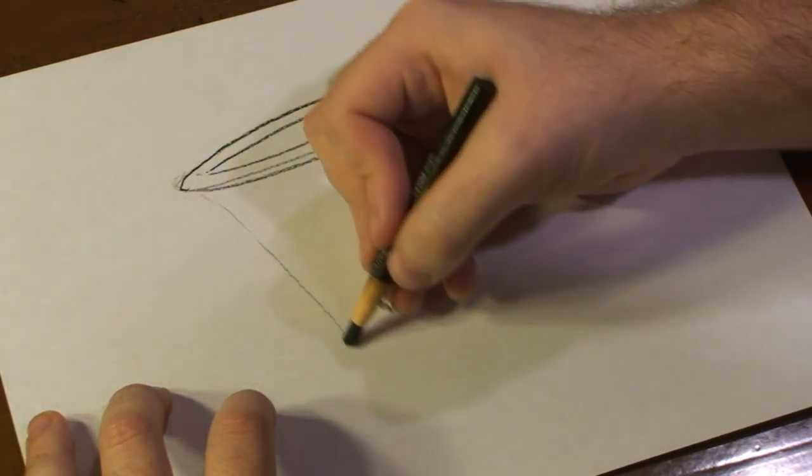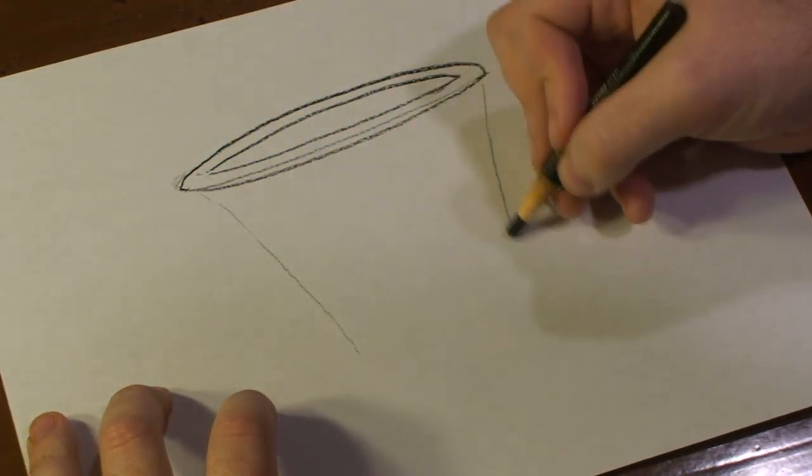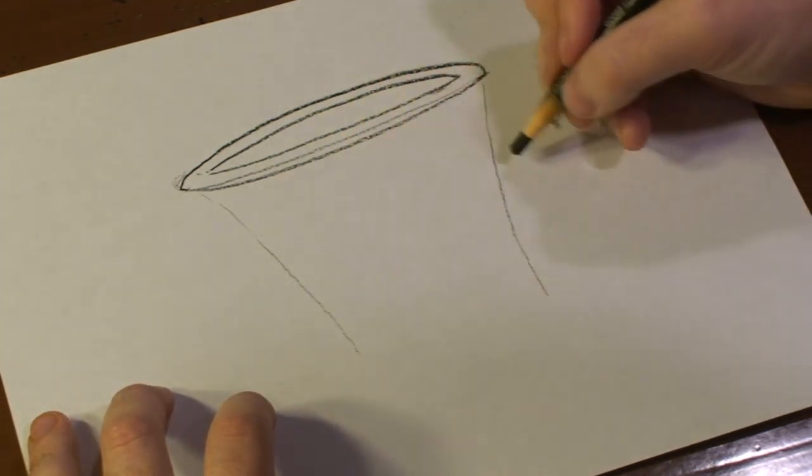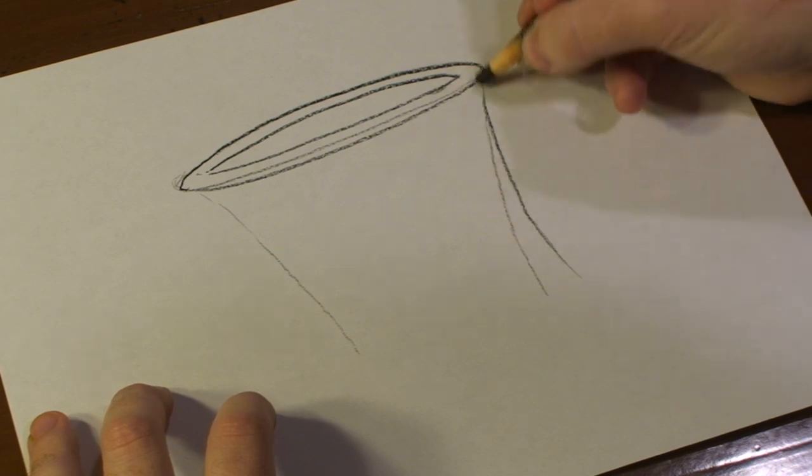And after that, you want to draw a bit of a basket body to it, but then you don't want to enclose it. And what you want to do is, you want to add another line like so.